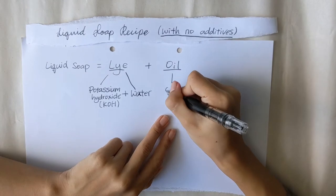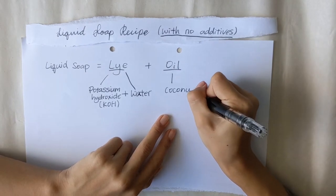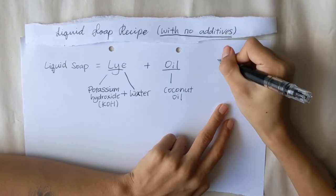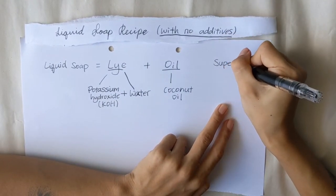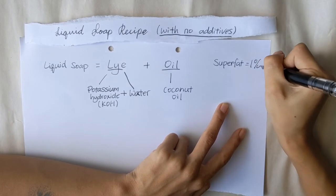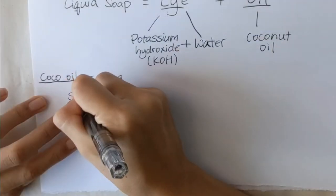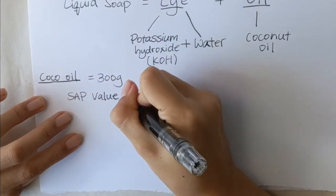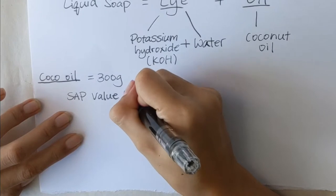We will be using coconut oil in this recipe and adding to it a 1% superfat. Excess superfat in a liquid soap recipe tends to result in oil lye separation, so we prefer it at a low 1%. Coconut oil has a potassium hydroxide saponification value of 0.253.